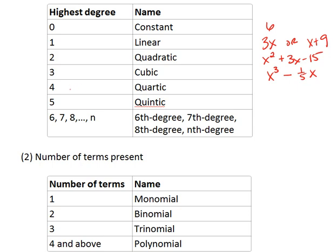Sometimes the quartic is just called a fourth degree polynomial. Sometimes the quintic is just a fifth degree polynomial. But they will be x to the fourth plus x squared plus 6 or x to the fifth plus x to the fourth minus x.